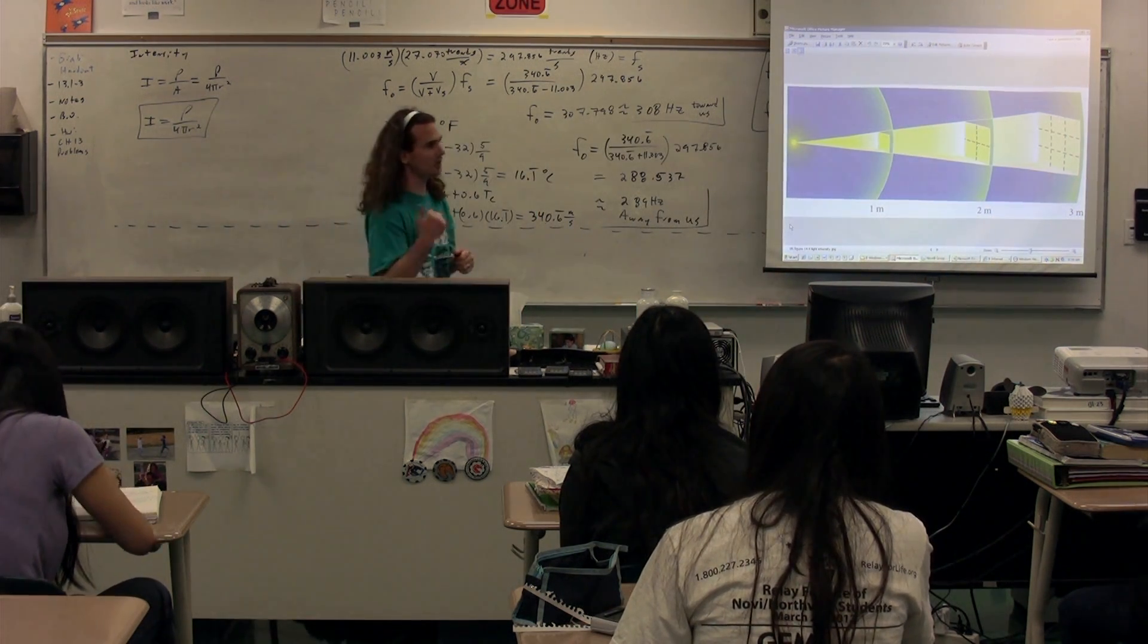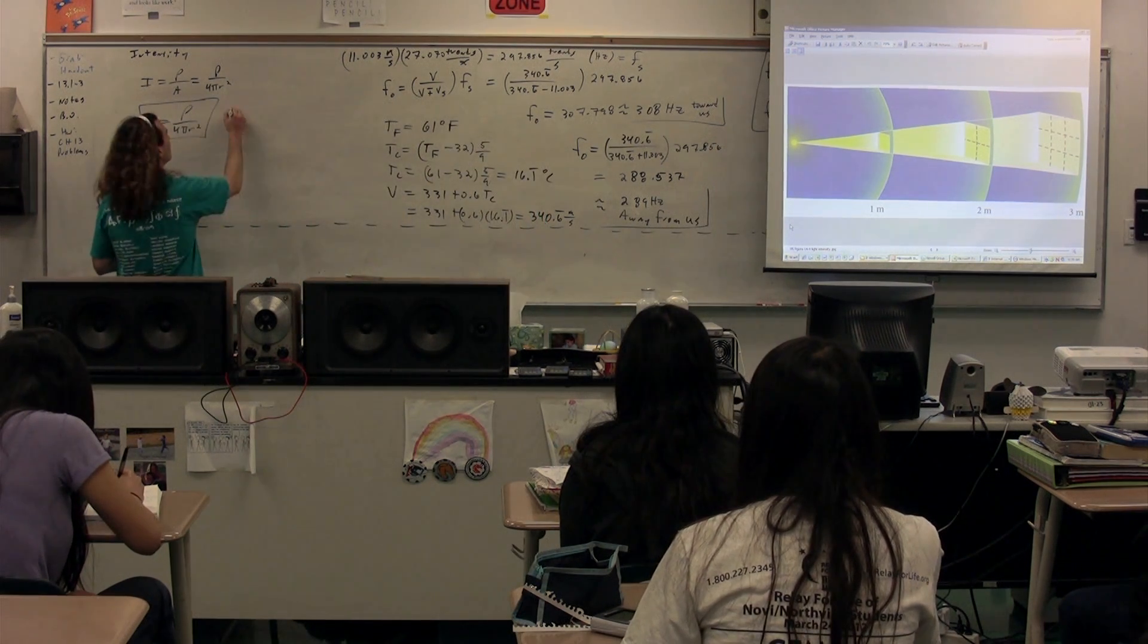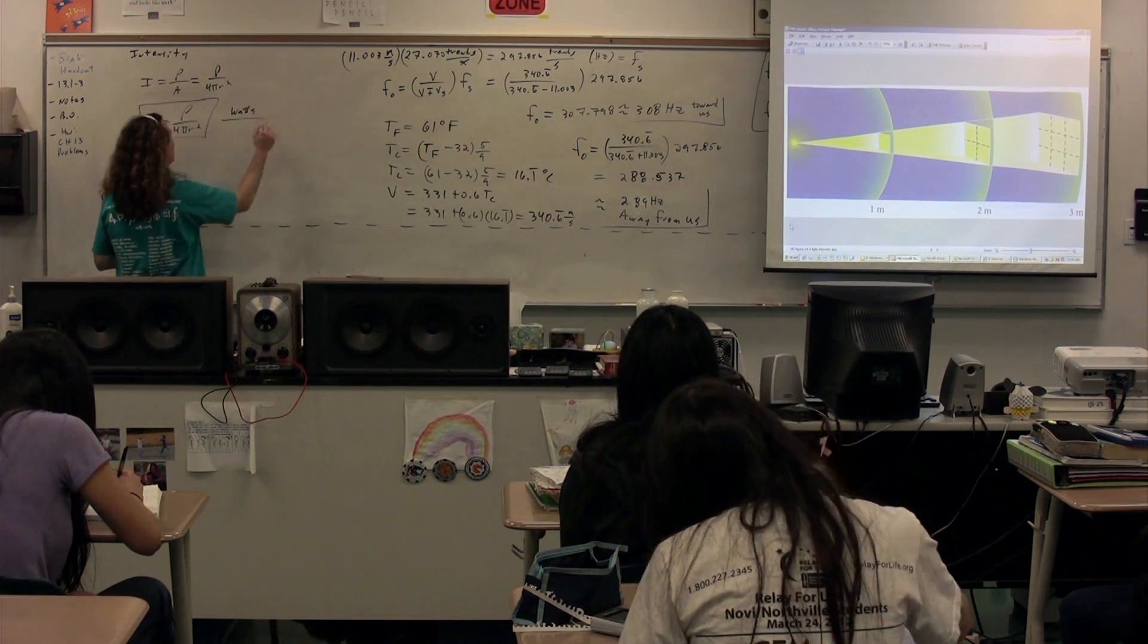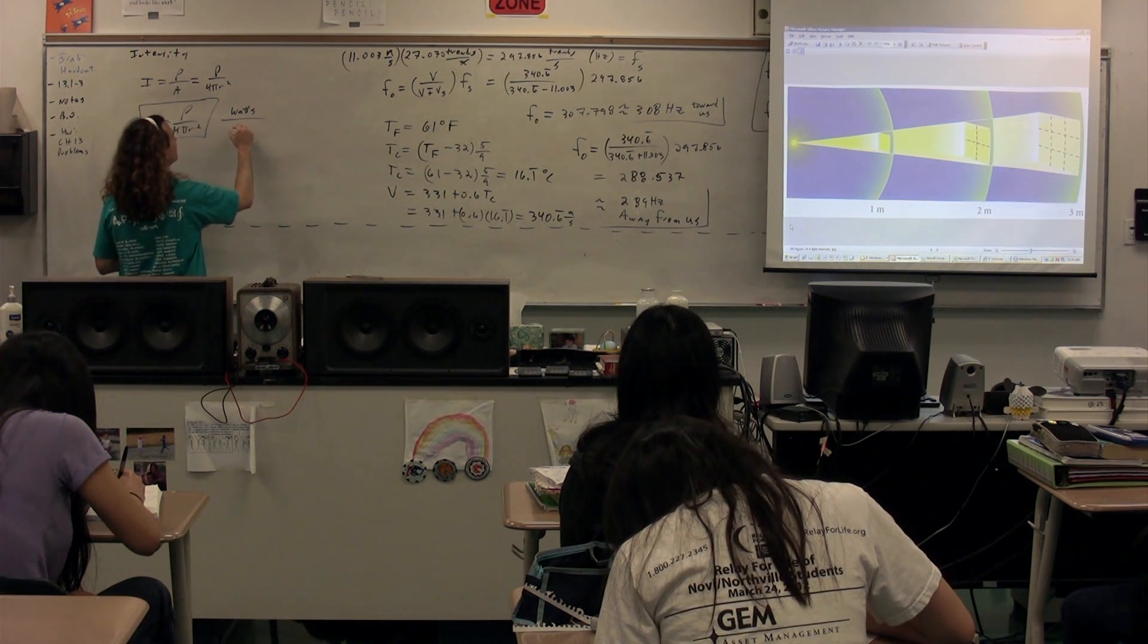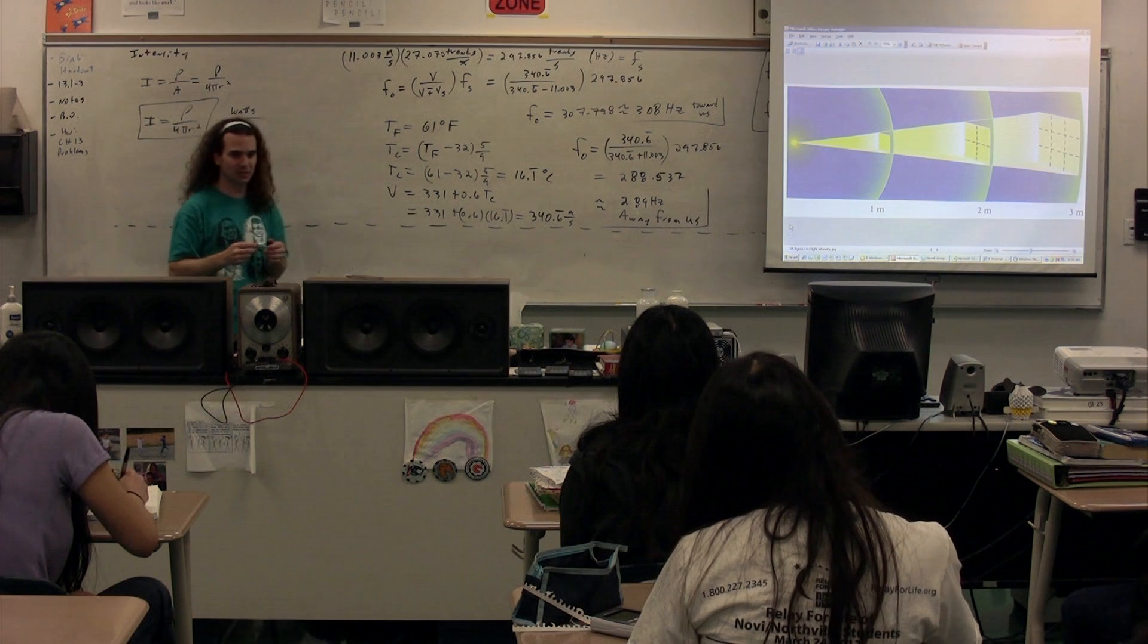Dimensions for intensity. Krauss, what are the dimensions for power? Watts divided by area. Meters squared. So, intensity is in watts per meter squared.